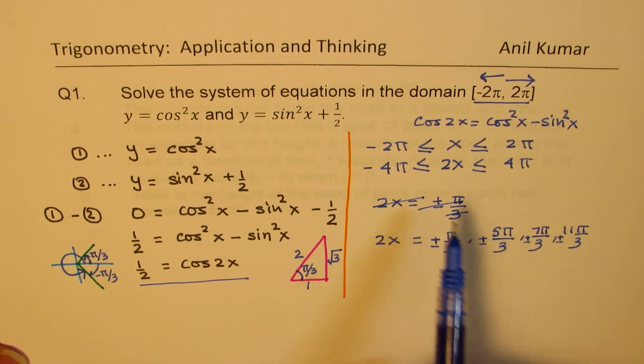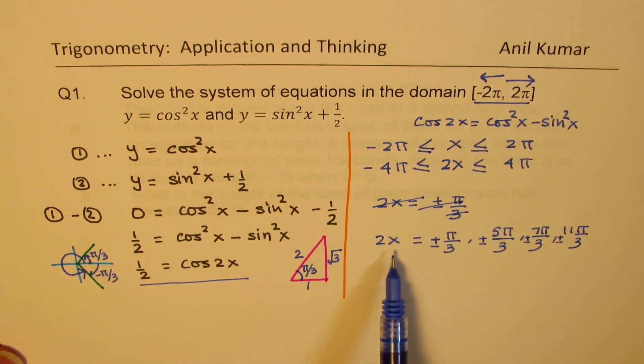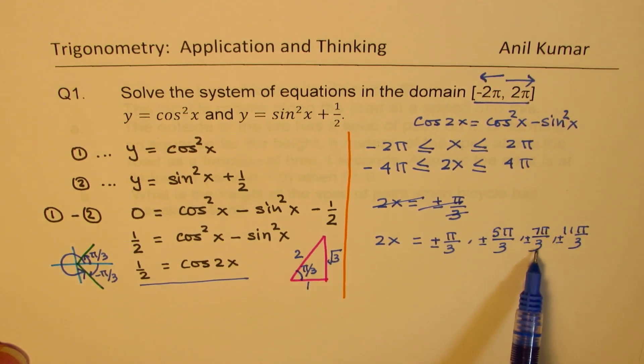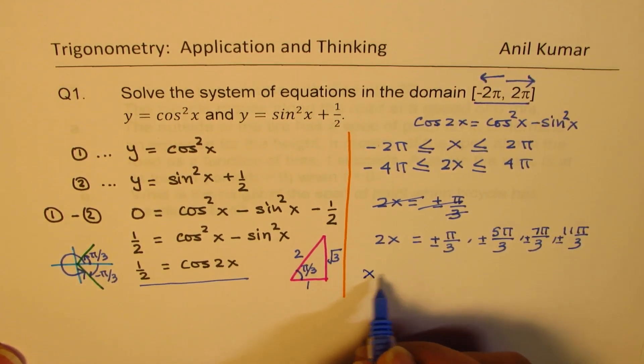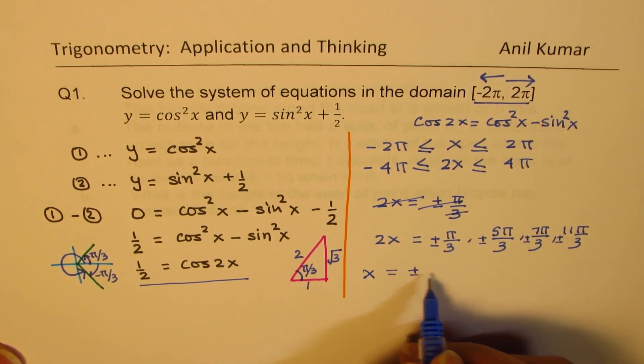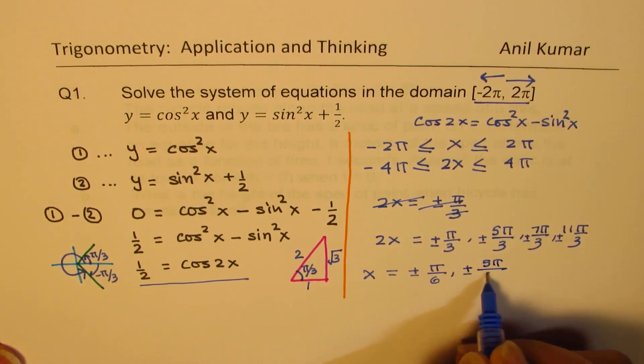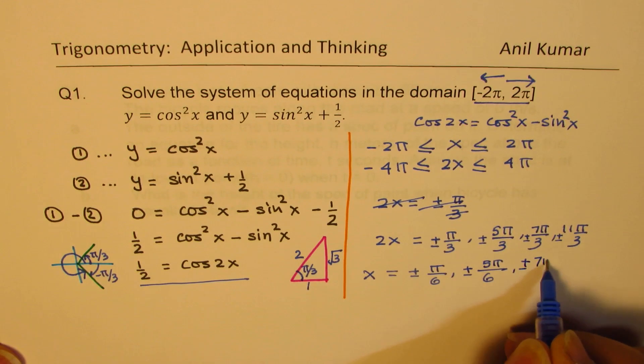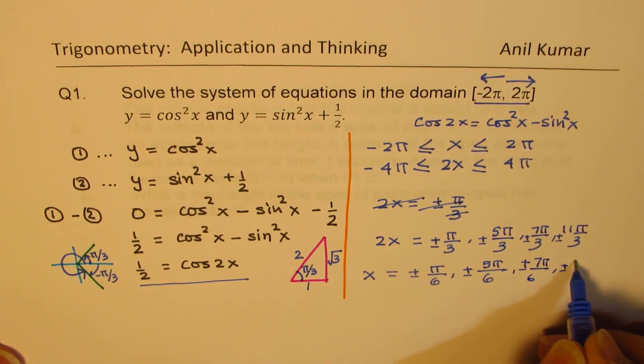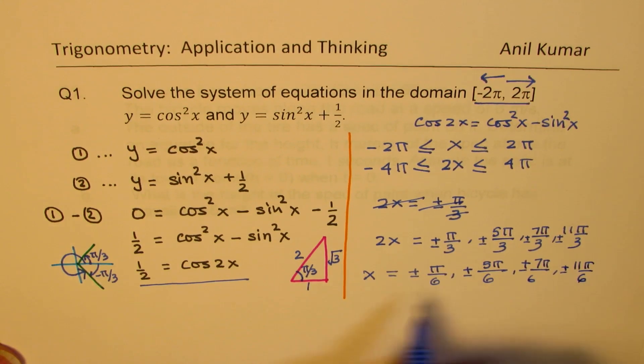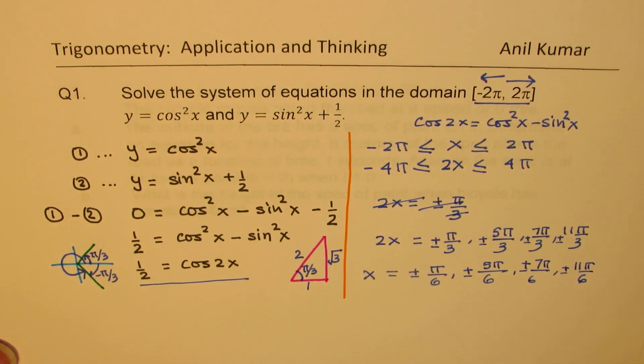So within this domain, the value of 2x should be plus minus π by 3, plus minus 5π by 3, plus minus 7π by 3, and plus minus 11π by 3. How about the value of x? So x will be half of these. We'll have plus minus π by 6, plus minus 5π by 6, plus minus 7π by 6, and plus minus 11π by 6. So we have 8 solutions. These are the 8 solutions for our question. I hope that is absolutely clear.